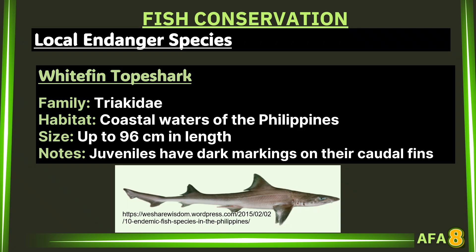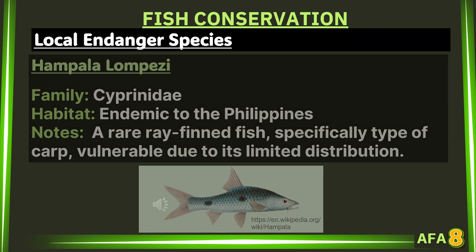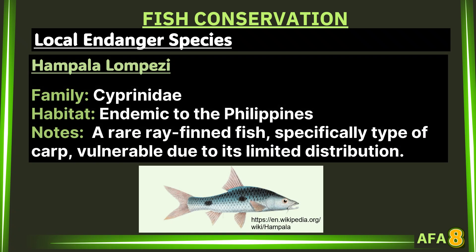The following are local endangered species. The whitefin topshark, from the family Triakidae, is found in the coastal waters of the Philippines and can grow up to 96 centimeters in length. Juveniles have dark markings on their caudal fins. The Hampala lompezi, from the family Cyprinidae, is endemic to the Philippines — a rare ray-finned fish and a type of carp, vulnerable due to its limited distribution.